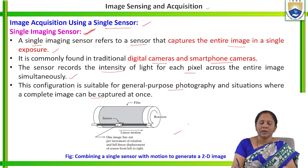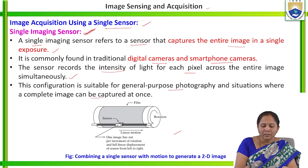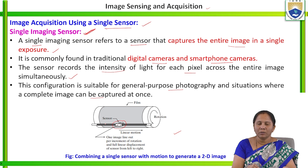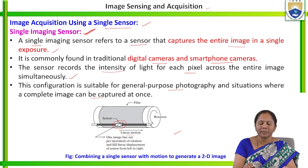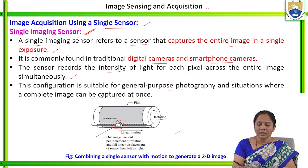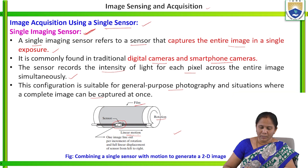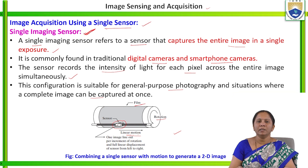Looking at the figure, this is the single sensor which captures the entire image simultaneously, extracting each pixel's information. Here, the linear motion shown indicates that the sensor moves in order to capture information about each pixel of the entire image. It moves in a clockwise direction, rotating and capturing information in a linear manner. This film is where the image is captured. That is what the single imaging sensor configuration is about.